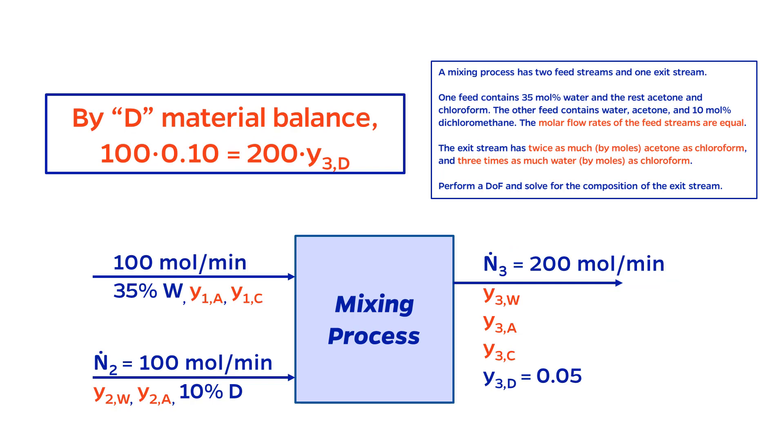Now we can solve the dichloromethane material balance. DCM only comes into the process through stream 2, so it is 100 moles per minute times 10% equals 200 moles per minute times the composition of DCM in stream 3. Solving yields 5%.